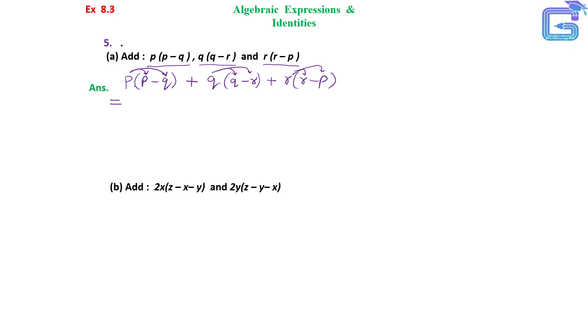P multiplied by P is P square minus P into Q is PQ plus Q multiplied by Q is Q square minus Q into R is QR plus R into R is R square minus R into P is RP.